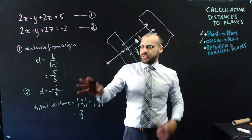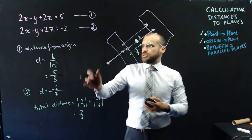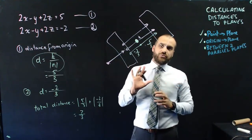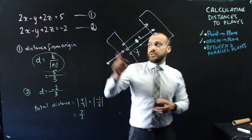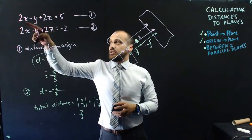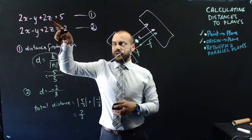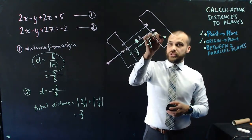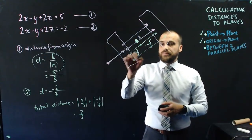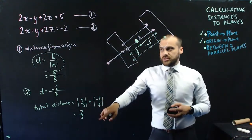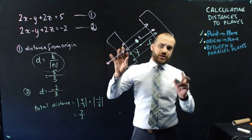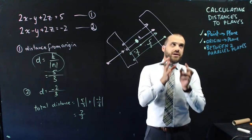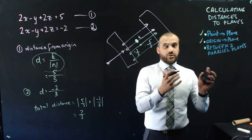The distance between the two planes is 7/3. This is a neat and relatively straightforward method — just remember the formula and apply it twice. Alternatively, if you forget this approach, you can find a point on one plane, then calculate the distance from that point to the other plane using the point-to-plane formula. That will give the same answer. So we've covered calculating distances to planes from points, from the origin, and between two parallel planes.